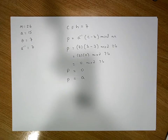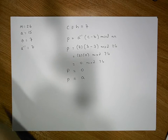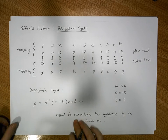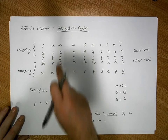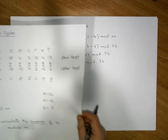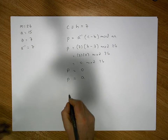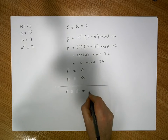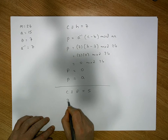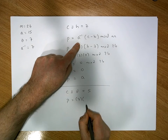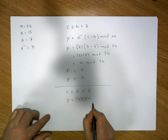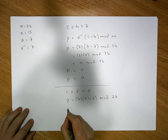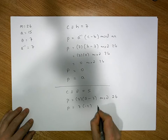Let's do one more example. Let's take F as our ciphertext and see if we get M back as our plaintext. So the ciphertext is F, which has a numerical encoding of 5. The plaintext must be equal to a inverse, which is 7, times our ciphertext, which is 5, minus our b value, which is 7, modulo 26. That gives us p is equal to 7 times minus 2, modulo 26.